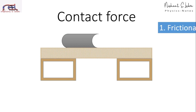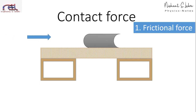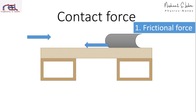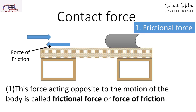Let us see the first example: frictional force. You can see on your screen a table and a book. When we push this book to one side of the table, there is another force acting against it — and that force is known as the force of friction. This friction acting opposite to the motion of the body is known as frictional force or force of friction.